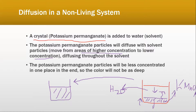The color change occurs because initially all particles — say a thousand particles of potassium permanganate — were together in a smaller space, showing a darker color. Once they spread throughout the beaker via diffusion, those particles are far apart from each other, so the color changes from dark purple to pinkish or light purple, becoming lighter and more transparent.